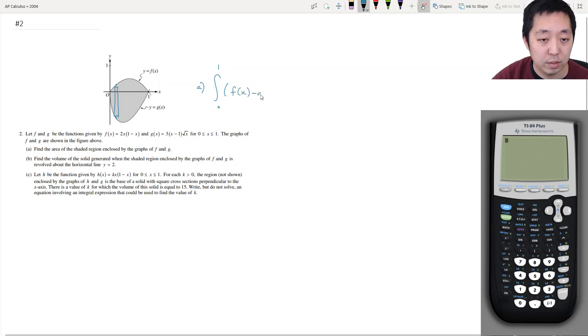So I do f of x minus g of x dx, so that would be the area. We're going to do the integral where f of x is 2x(1 minus x) minus g of x which is 3(x minus 1)√x.